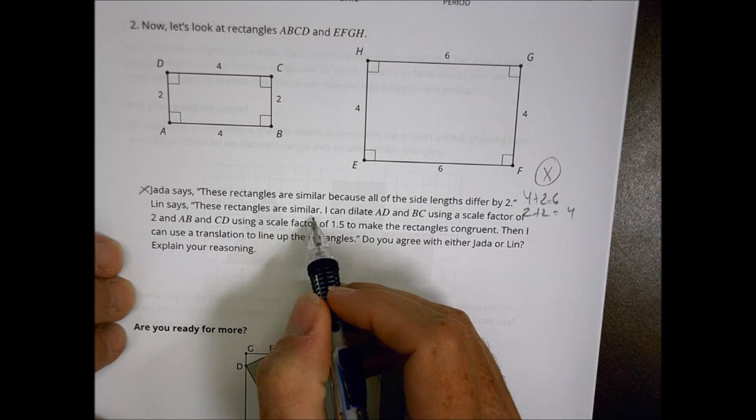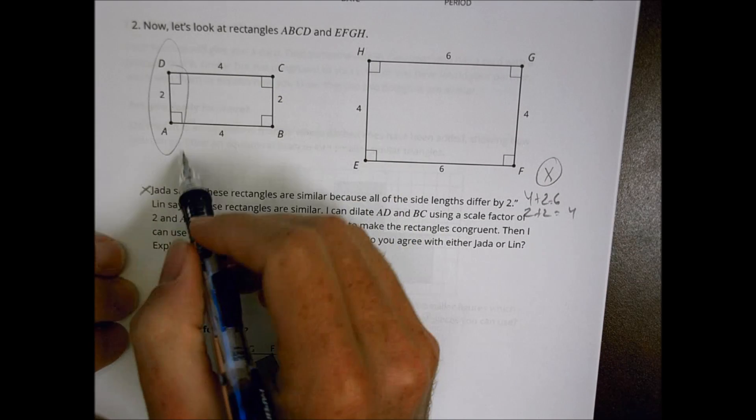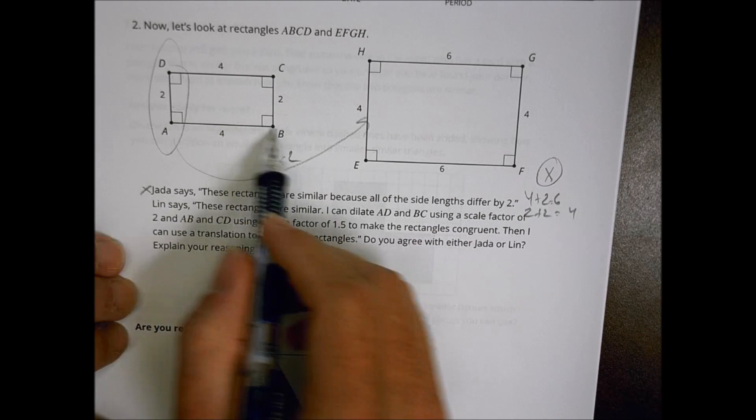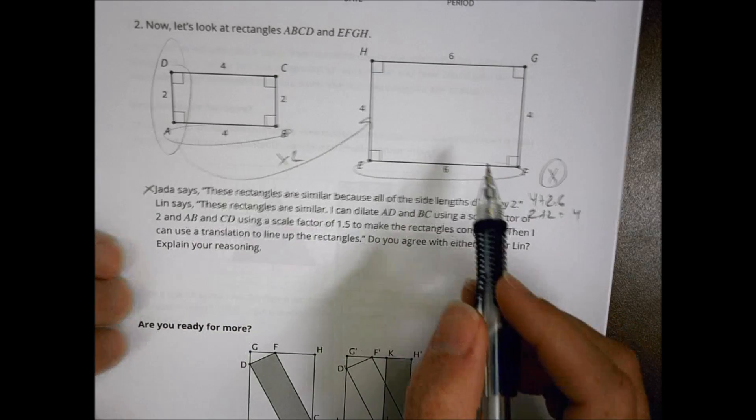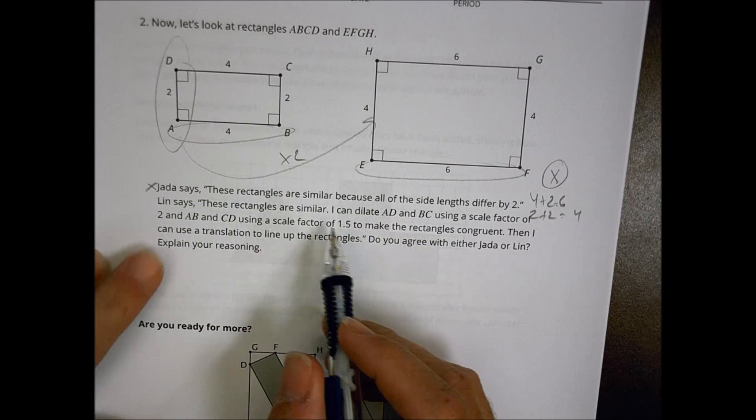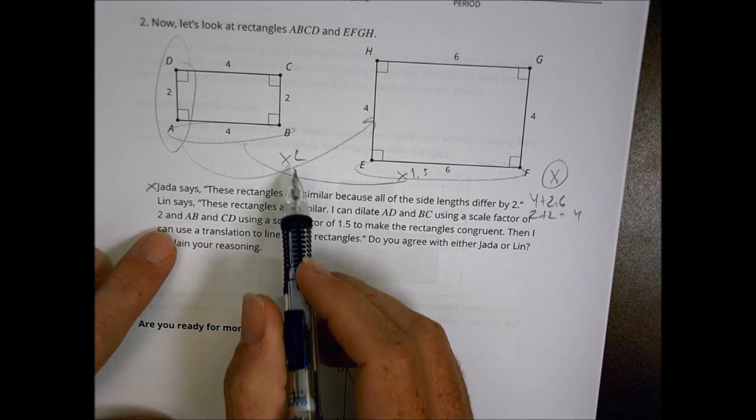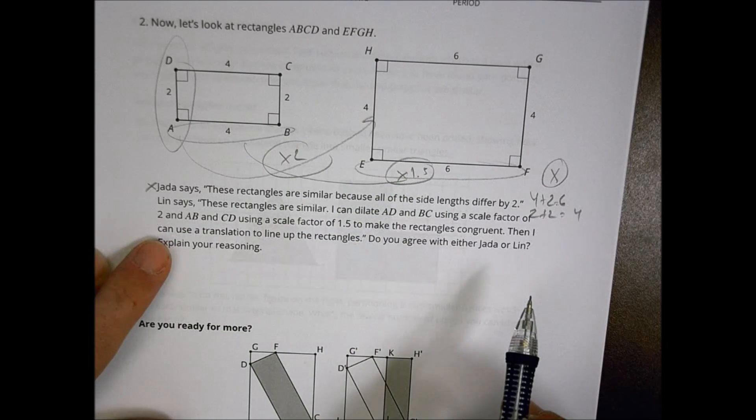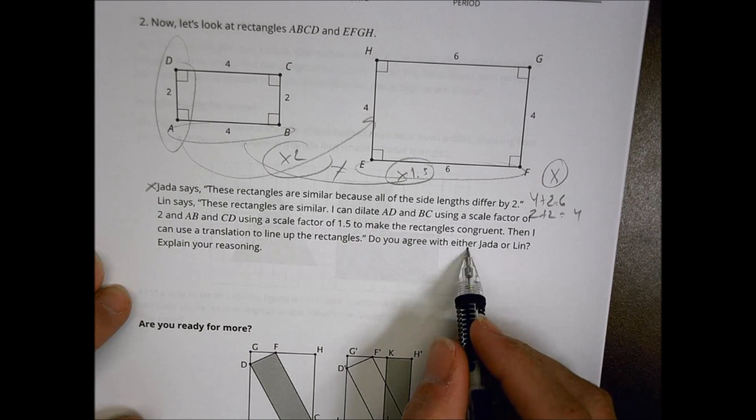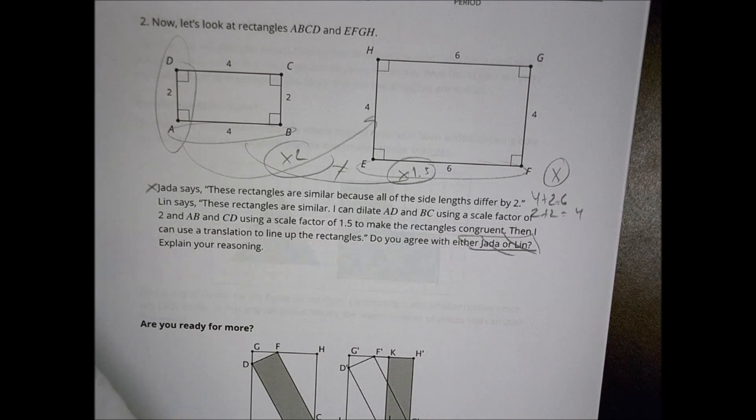Now for Lynn, she says they're similar. She can dilate AD and BC using a scale factor of two. And then going from AB to EF, what Lynn is saying is that we're going by a scale factor times 1.5. The problem with that is that your scale factors in order to have to work need to be equal, and those are not. So it actually would probably say, I don't agree with either one of them. They are both mistaken in how they do things there.